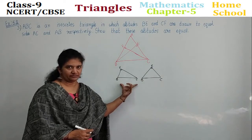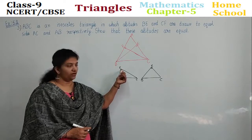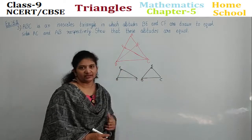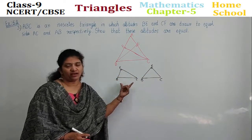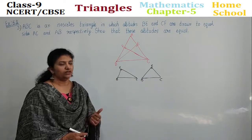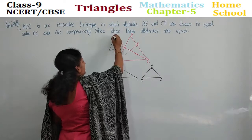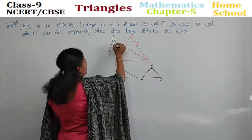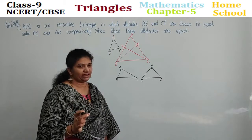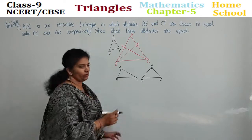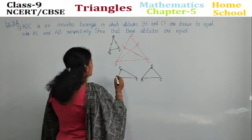BC is a common side. This altitude is perpendicular — this is a right angle. One corresponding angle, one corresponding angle and corresponding sides pair are equal. Now if these two sides are equal — in triangle ABC, AB is equal to AC given — immediately what do you remember? If two sides are equal, then their opposite angles are equal. So I can say angle B is equal to angle C.